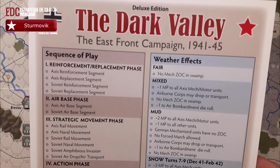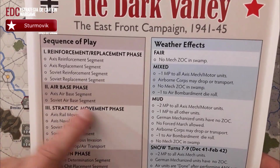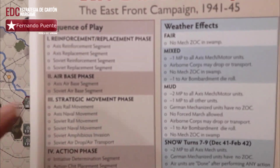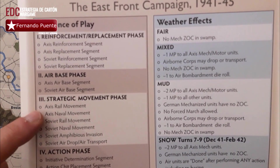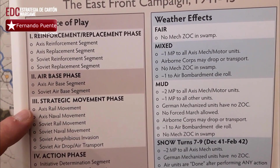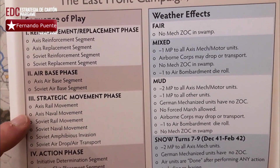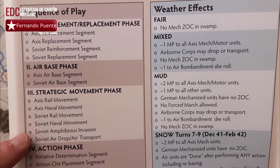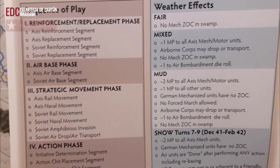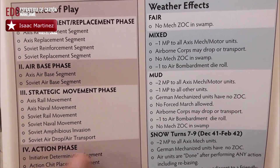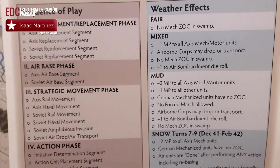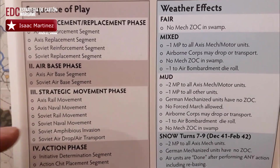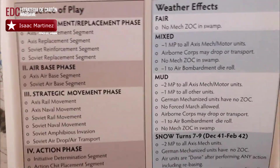La fase de movimiento estratégico que estáis viendo aquí es importante seguirla. Como estáis viendo, empieza con el movimiento por ferrocarril del eje, movimiento naval del eje, movimiento ferrocarril soviético, naval soviético, anfibio soviético y de unidades aerotransportadas soviéticas. Tenemos que seguir paso a paso: primero uno, después otro, así sucesivamente.